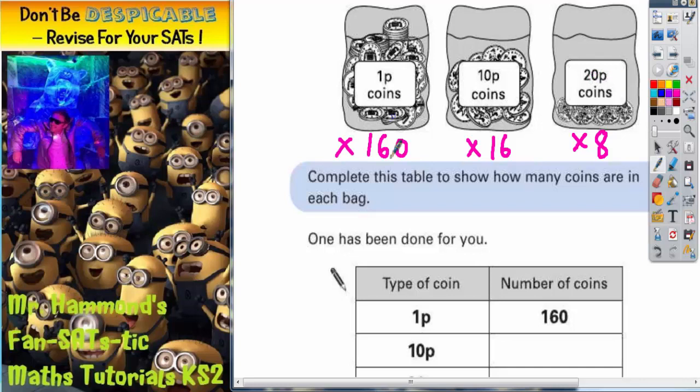Let's just double check that again. So one hundred and sixty lots of one p would be one hundred and sixty p. Sixteen lots of ten p, sixteen times ten, would be one hundred and sixty p. And eight lots of twenty, eight twos are sixteen plus the zero on the end, is also one hundred sixty pence. So as you can see, they are the numbers of coins that we would have.